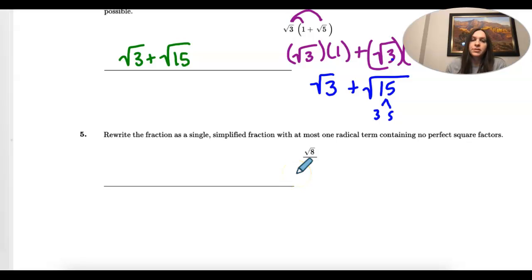So now we're getting to division. We're going to rewrite the fraction as a single simplified fraction with at most one radical term containing no perfect square factors. So right now we need to simplify the square root of 8.